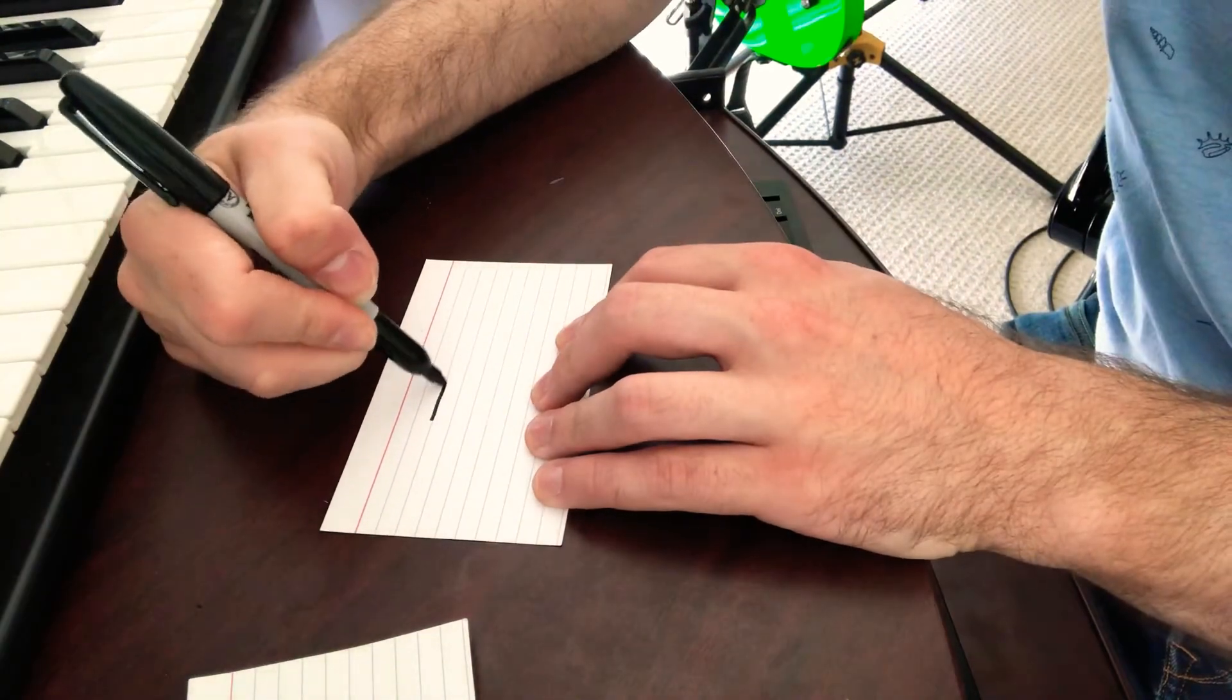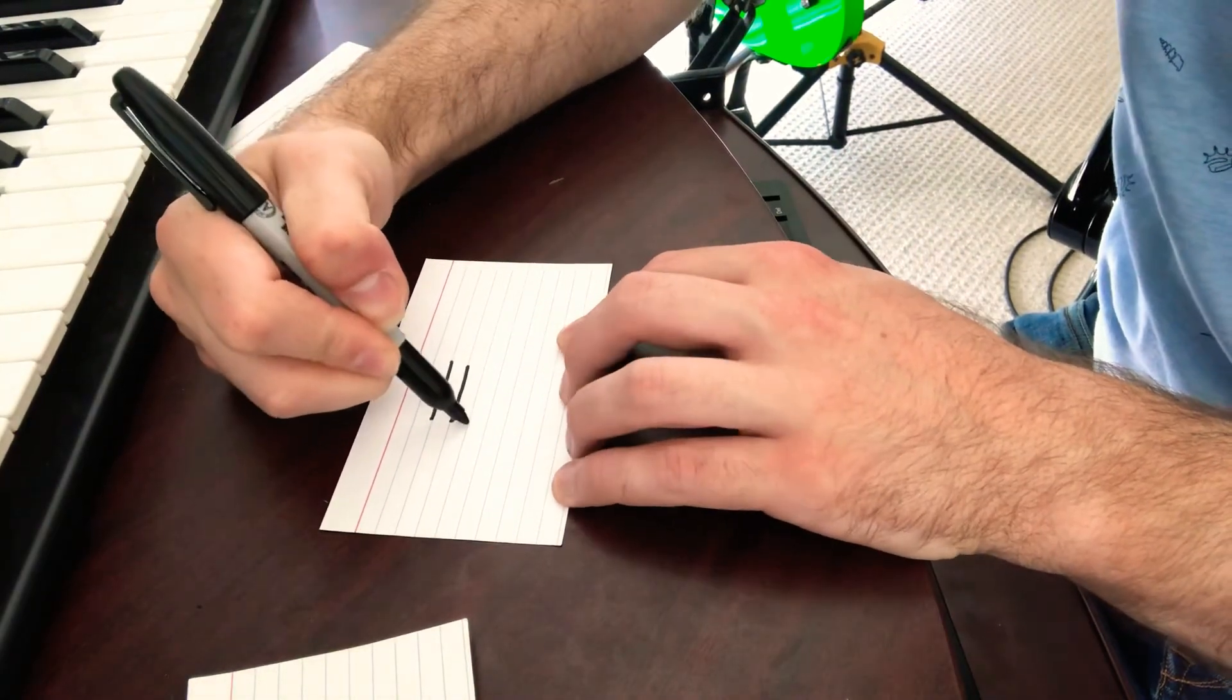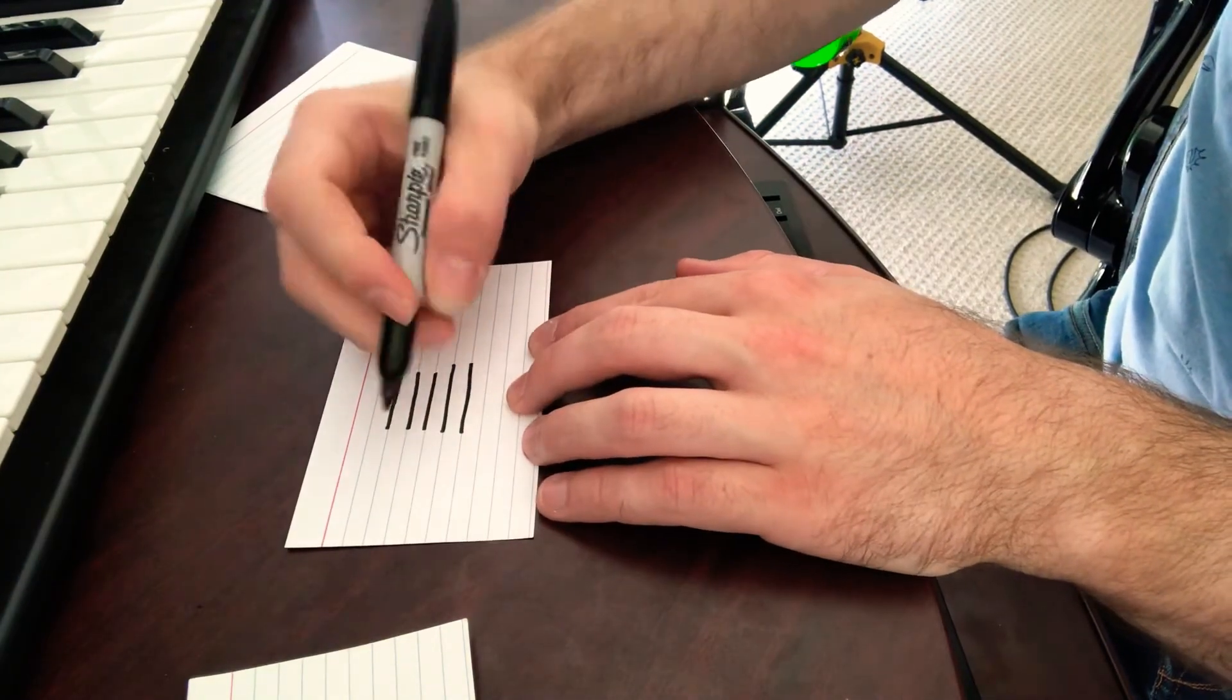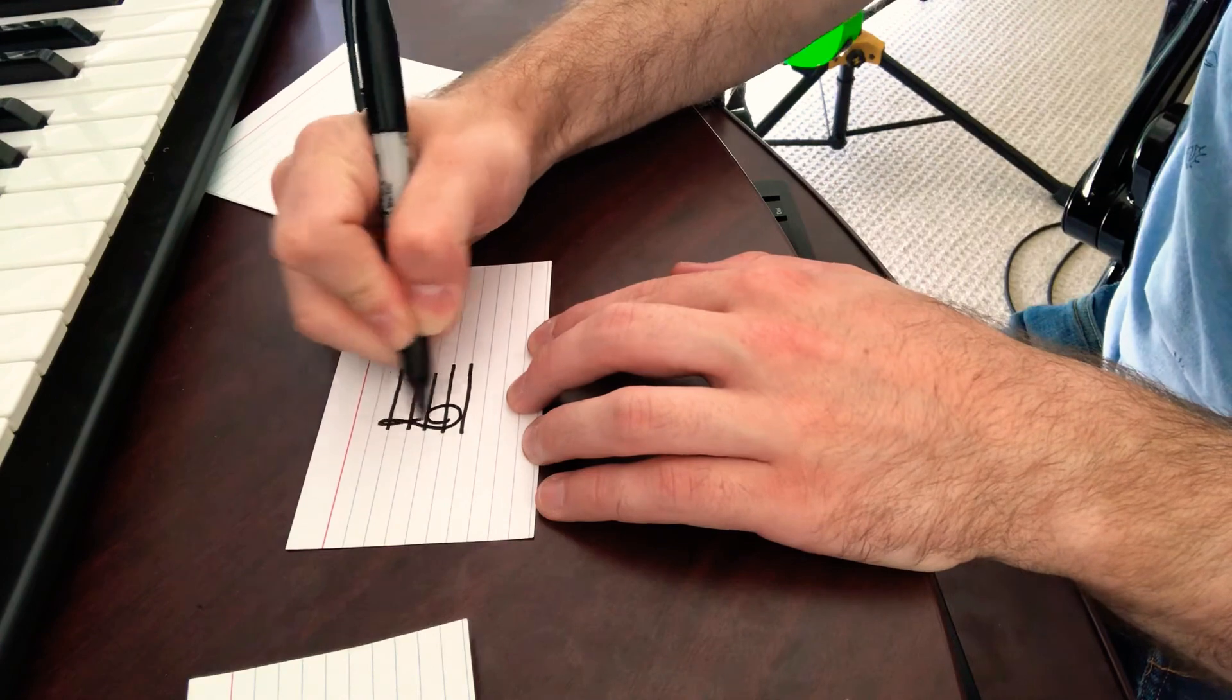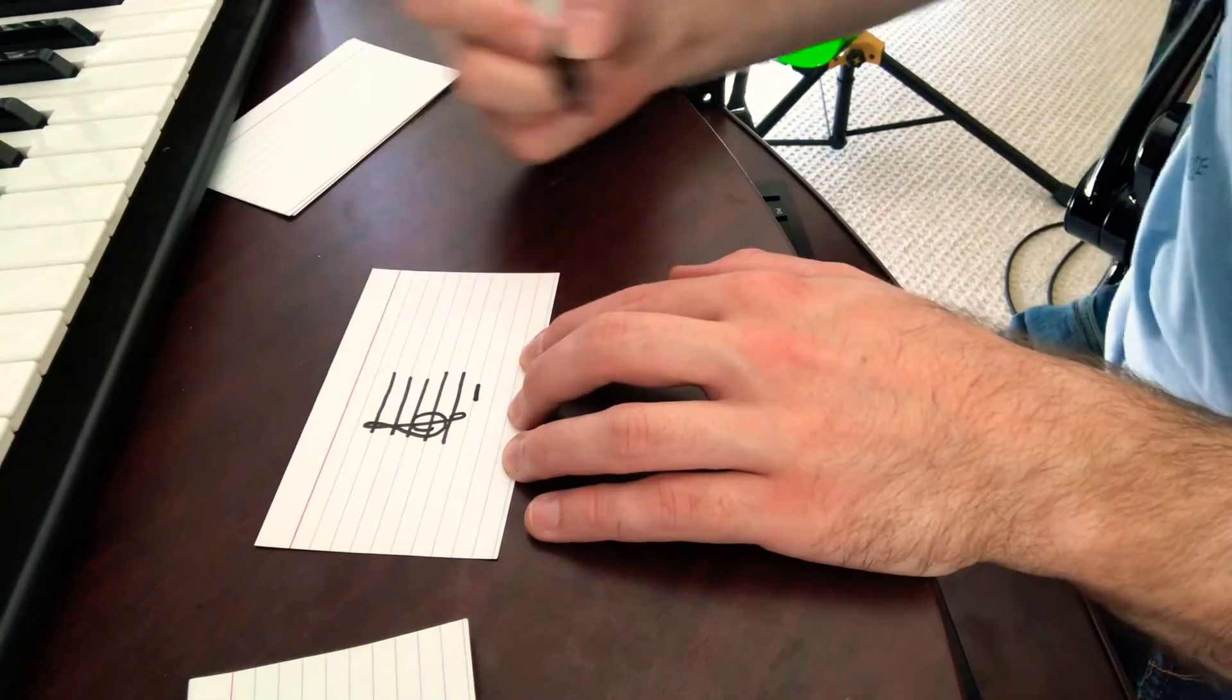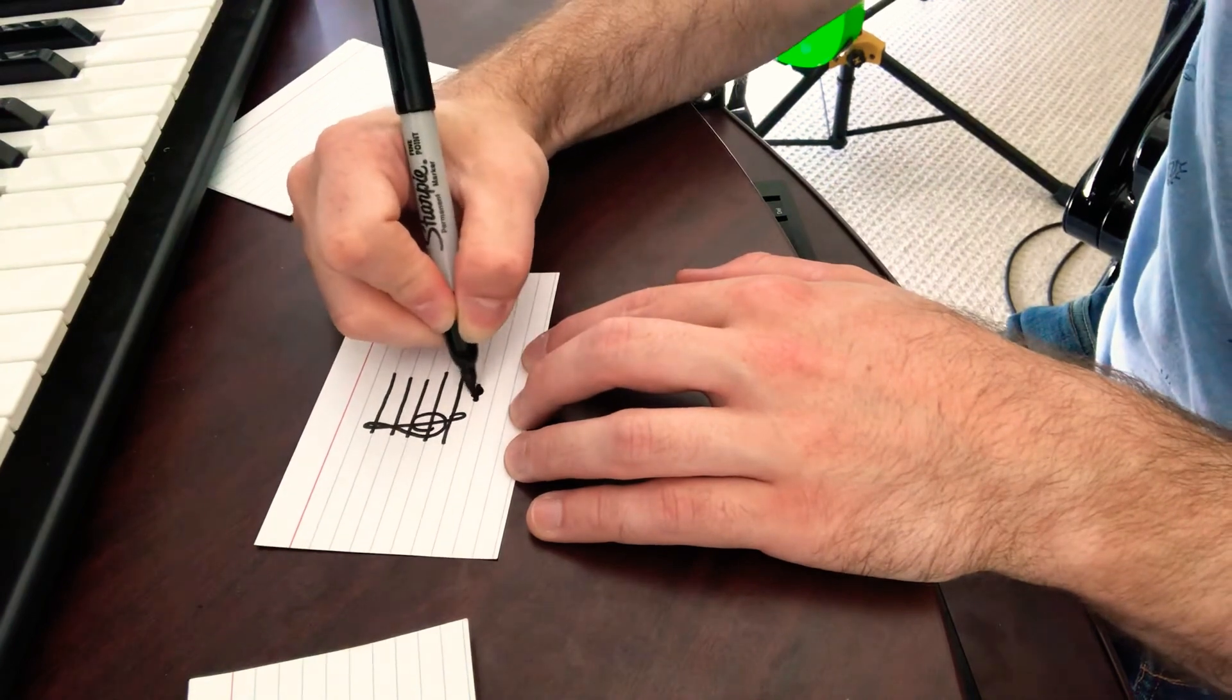And when you get below the staff, so when you passed D, when you pass this one here, you have to draw yourself an extra line, a ledger line, and that's where you'll find your C.